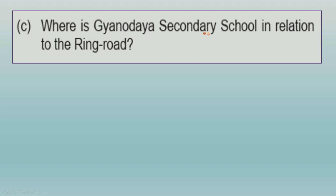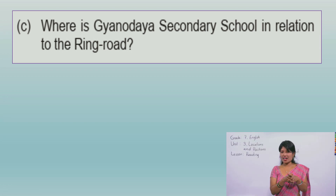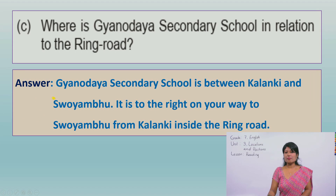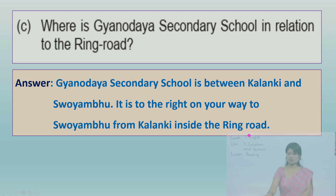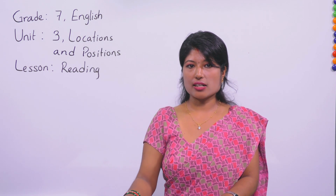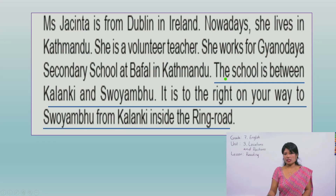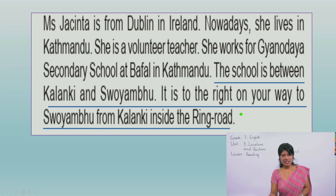Number C: where is Gyanoday Secondary School in relation to the ring road? The answer is: Gyanoday Secondary School is between Kalanki and Soembu. It is to the right on your way to Soembu from Kalanki, inside the ring road. You find this answer in the paragraph where the school's location is described.